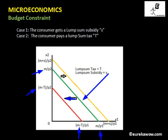As a result of the lump sum tax T, the budget line shifts inward parallely, with horizontal intercept m minus T by p1 and vertical intercept m minus T by p2. The opposite is a lump sum subsidy of s, which is like an increase in income — the budget line shifts outward parallely to a new line where intercepts become m plus s by p1 and m plus s by p2.